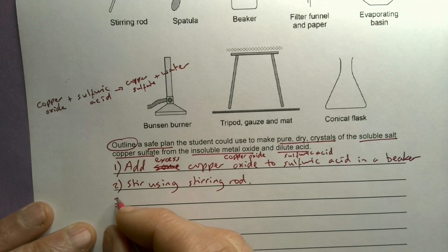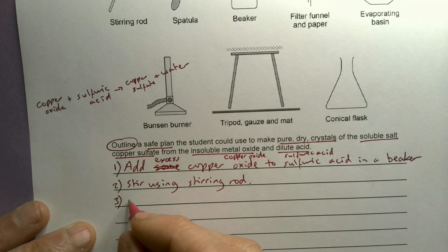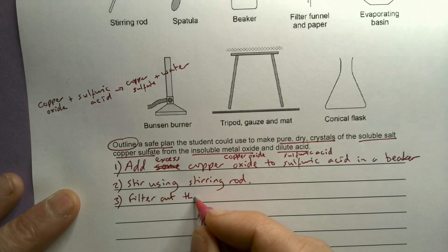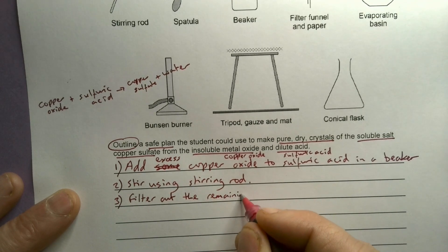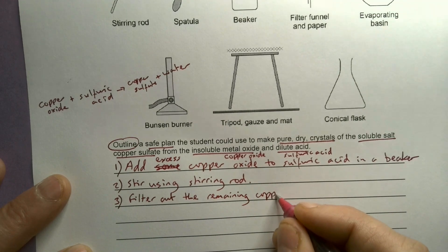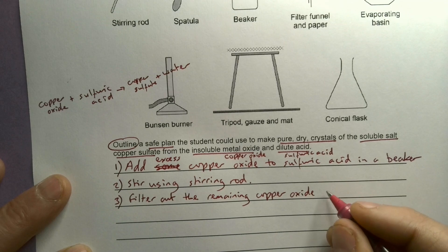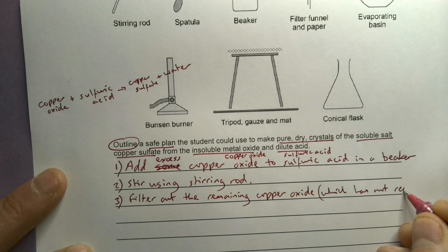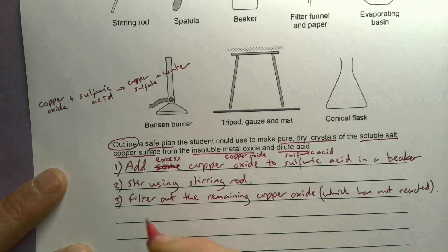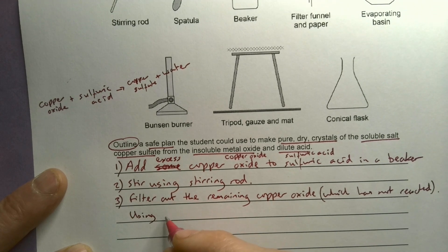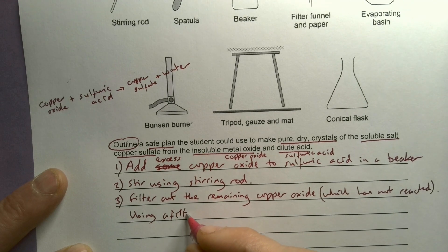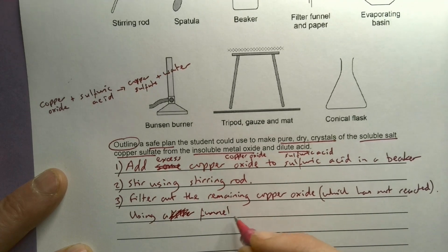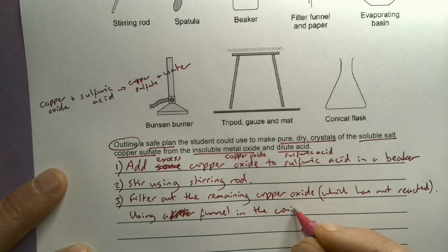So I'm then going to filter out the remaining copper oxide, which is not reacted, and I'm going to use a filter, sorry, use a funnel in the conical flask.